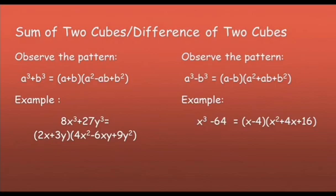To get the middle term, multiply the two terms: a times b gives ab. Notice the negative sign of the middle term. And to get the last term, square the second term: b times b gives b squared.